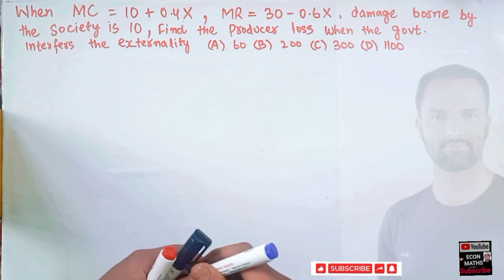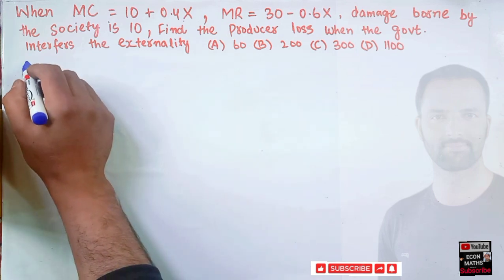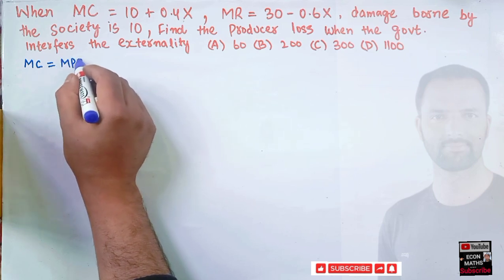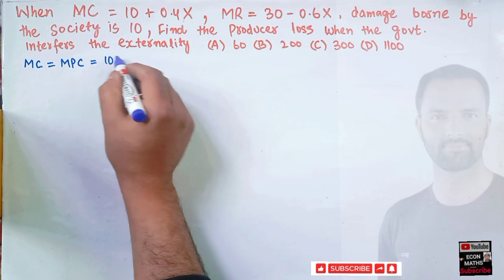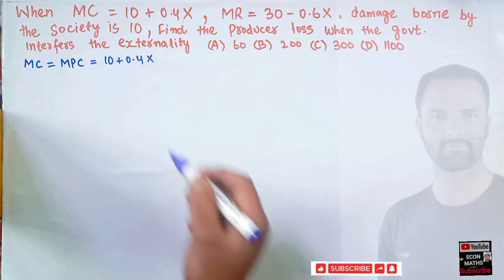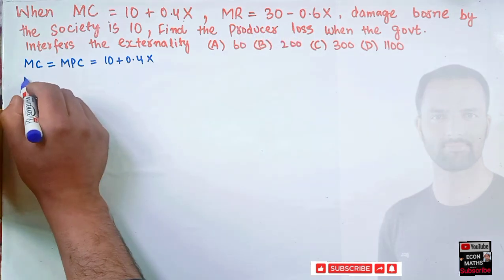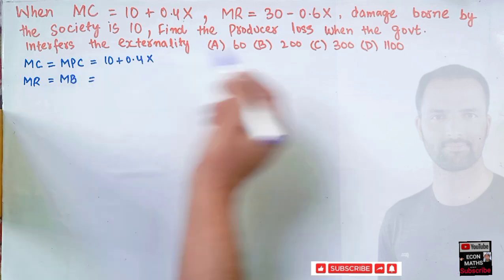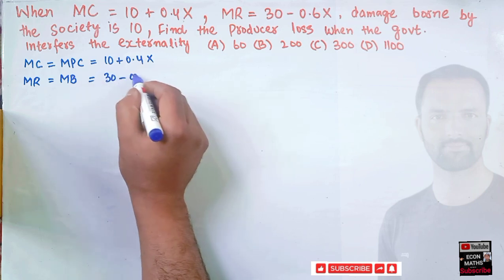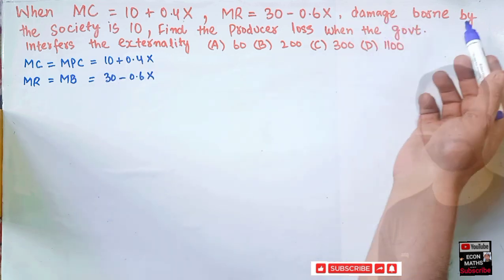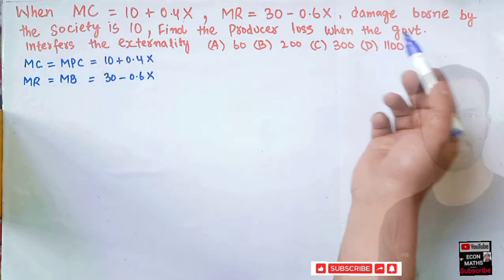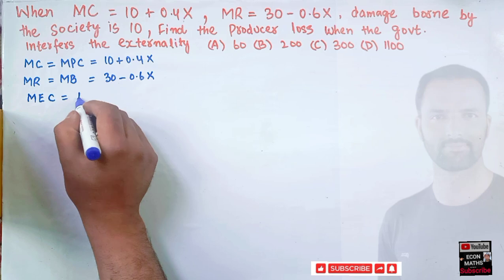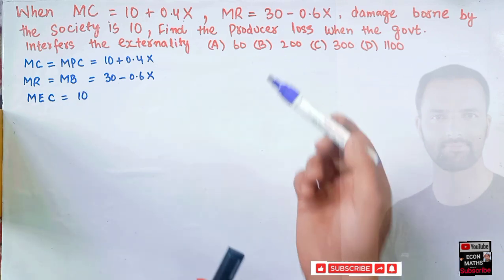Let's identify the terms. The marginal cost here is actually the marginal private cost, given as 10 + 0.4x. The marginal revenue is our marginal benefit curve — also the demand curve — given as 30 − 0.6x. The damage borne by the society (10) is our marginal external cost, so MEC = 10.